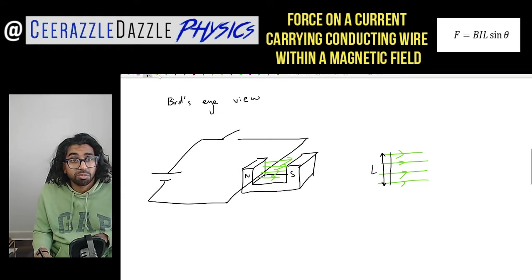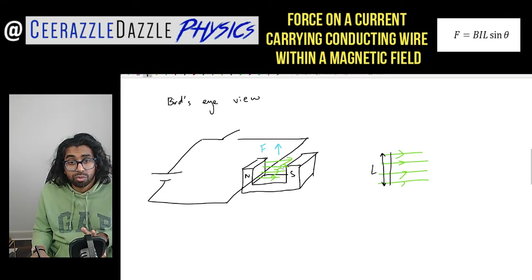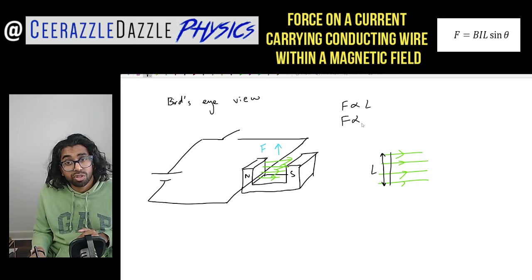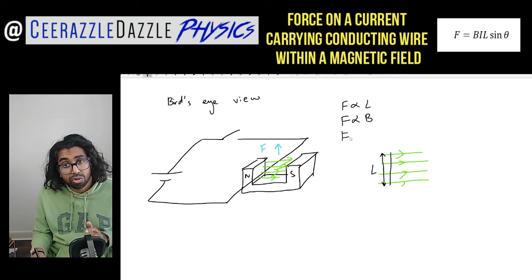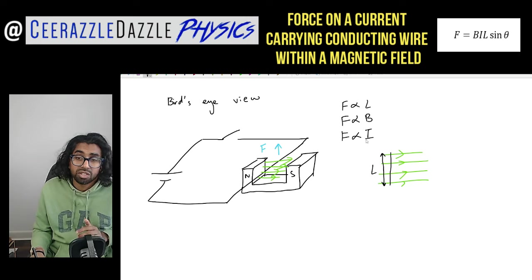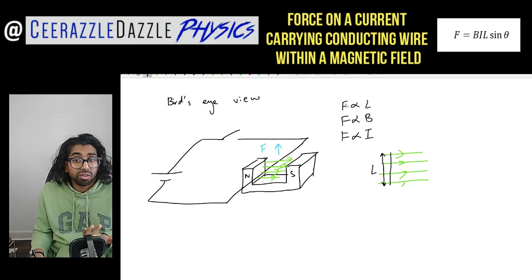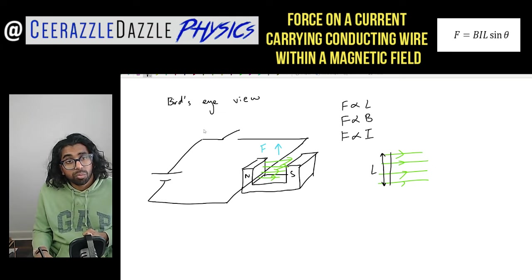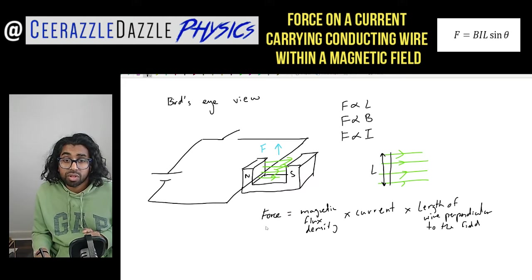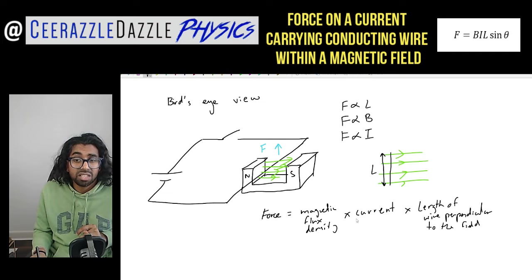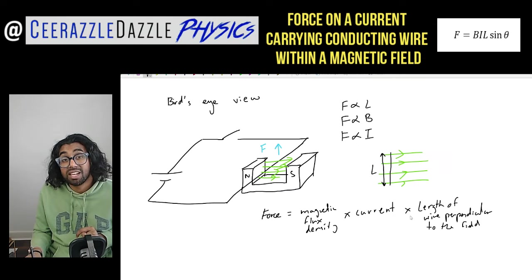From here we can talk about the factors affecting the force experienced by the wire. The force is proportional to the length of the wire within the field, proportional to the strength of the field — the magnetic flux density B — and also proportional to the current passing through the wire. So the greater the current, the greater the force; the greater the field, the greater the force; and the greater the length, the greater the force.